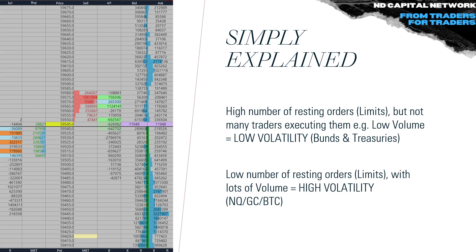If you want to be filled at large size, you cannot press market because you'll get slipped and affect the market. BTC is high volatility because there's a low number of resting orders — not many limits — yet it's traded with lots of volume. Assets like NASDAQ, gold futures (GC), and BTC fall into this category. Low volatility occurs at a high number of resting limit orders, and not many people playing at market — such as bonds and treasuries.